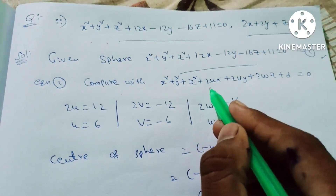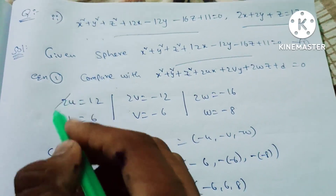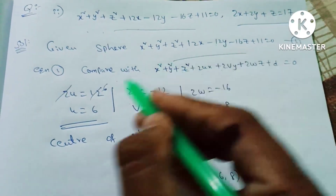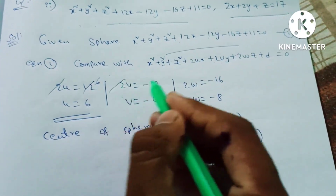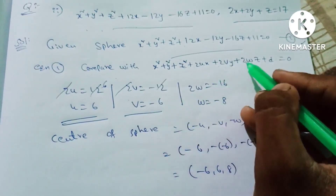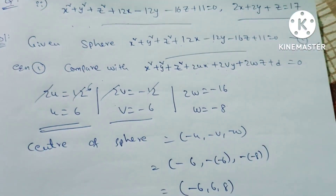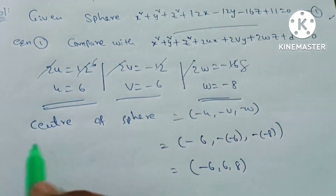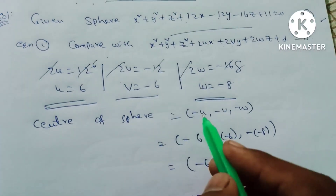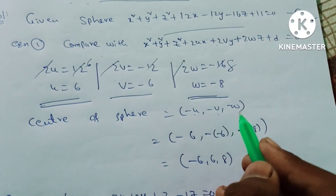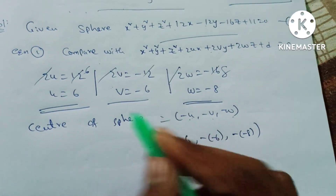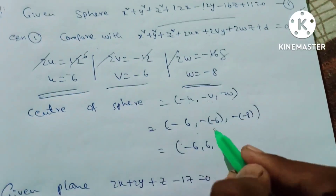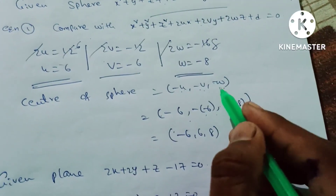Comparing coefficients: 2u = 12, so u = 6. 2v = -12, so v = -6. 2w = -16, so w = -8. The center is given by (-u, -v, -w), giving us: -u = -6, -v = 6, -w = 8. So the center is (-6, 6, 8).